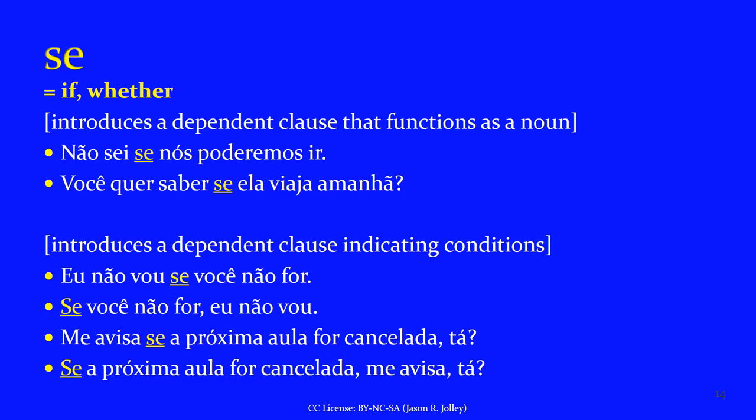Another really common one is SE, meaning 'if' or 'whether.' SE is a subordinating conjunction that introduces a dependent clause functioning as a noun or indicating conditions. 'Não sei se nós poderemos ir' — I don't know if we'll be able to go. 'Você quer saber se ela viaja amanhã?' — do you want to know if she travels tomorrow? For conditions: 'Eu não vou se você não for' — if you don't go, I'm not going. 'Me avisa se a próxima aula for cancelada, tá?' — let me know if the next class is canceled. You can also invert: 'Se a próxima aula for cancelada, me avisa.'